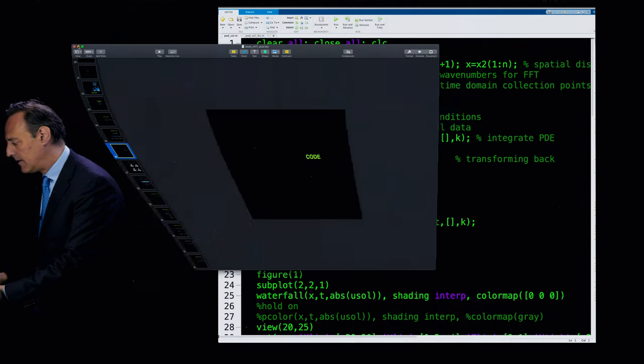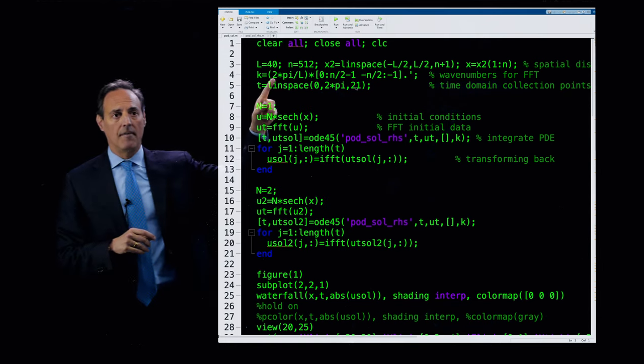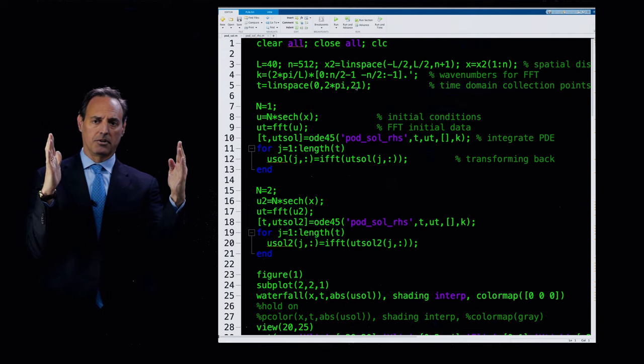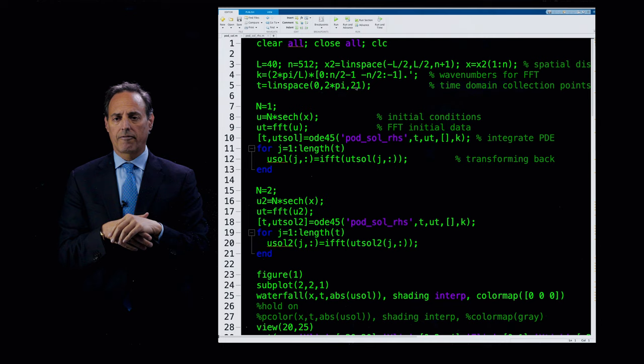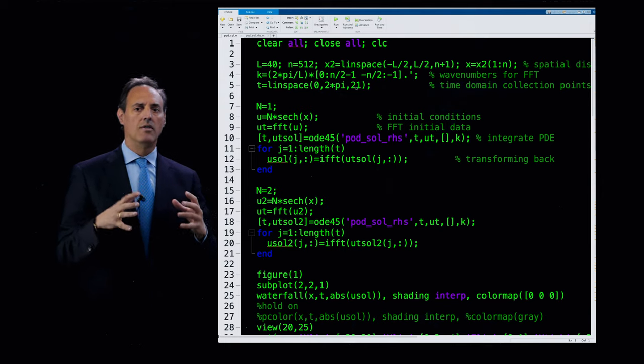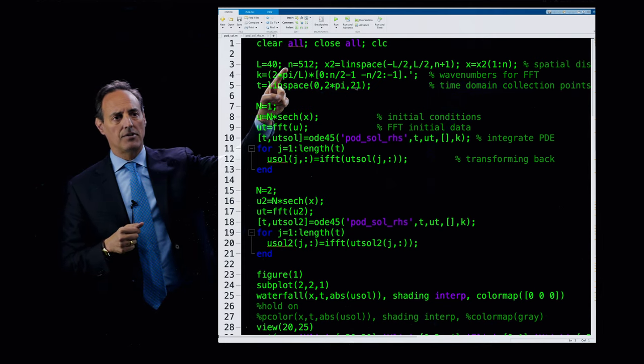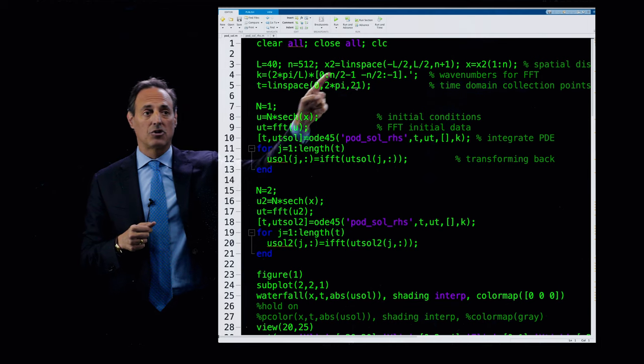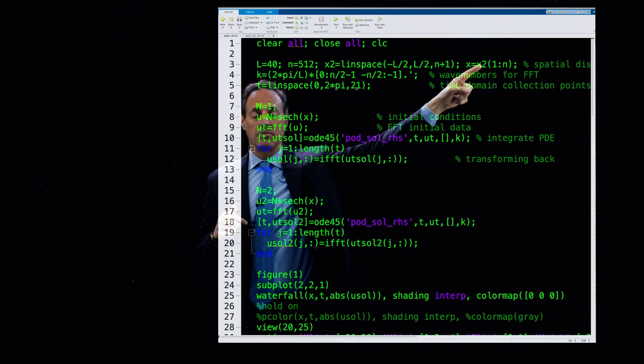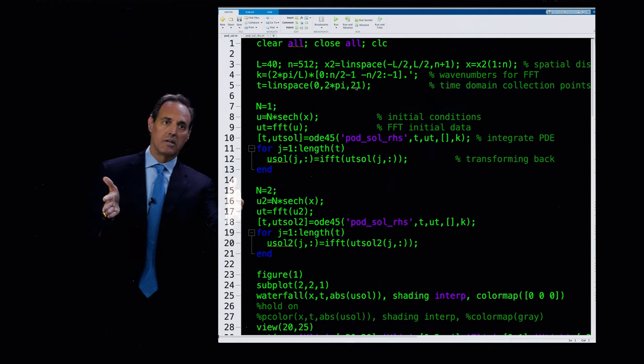Here we are. This is the code here. We're going to start off at the top lines here. I'm defining a domain, L equals 40. So this thing's going to go from a domain size being negative 20 to 20. There's 512 points. So I'm going to first solve this using a Fourier spectral method to solve this nonlinear Schrödinger equation. Size of the domain is 40, 512 points. I define a domain x2, which goes from negative 20 to 20 and n plus 1 points. I throw away the last point because it's periodic boundary conditions. I'm using Fourier modes after all. Then x is the first 1 through n points. So that's my discretization of the spatial domain I'm going to work in.